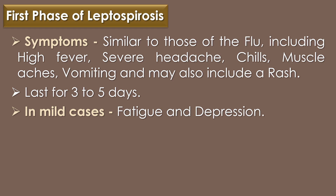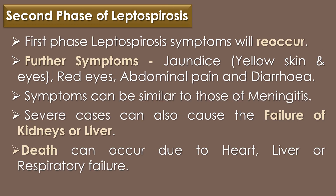Following the first phase, symptoms will reoccur and can vary according to severity. These may include jaundice or yellow skin and eyes, red eyes, abdominal pain, and diarrhea. Symptoms can be similar to those of meningitis. Severe cases can also involve failure of the kidneys or liver. Death can occur due to heart, liver, or respiratory failure.